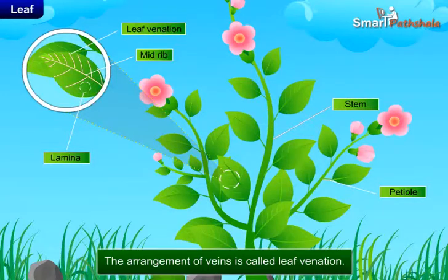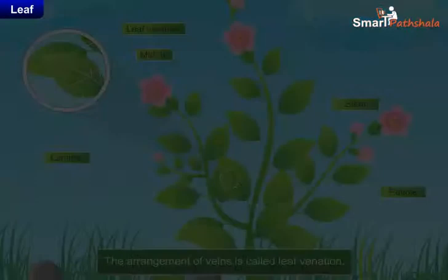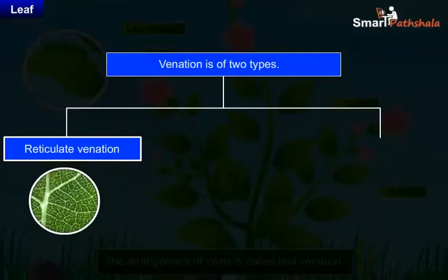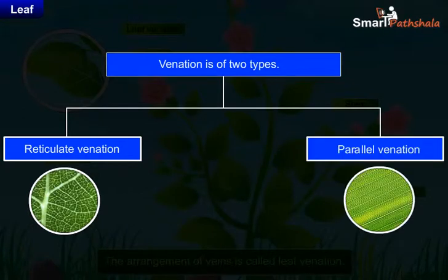If the veins are arranged like a net, then it is called reticulate venation. If the veins are arranged parallelly, it is called parallel venation.